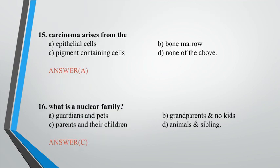Question 15: Carcinoma arises from the? A. Epithelial cells, B. Bone marrow, C. Pigment-containing cells, D. None of the above. Answer: A.